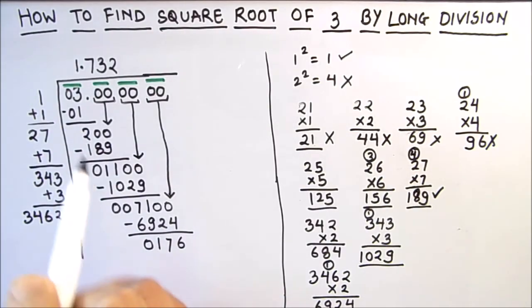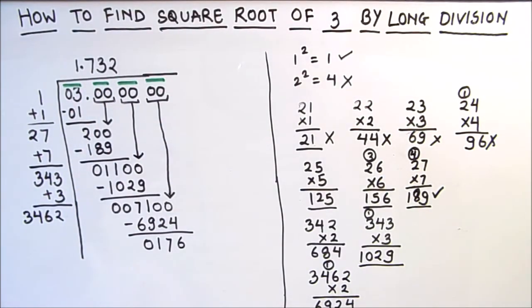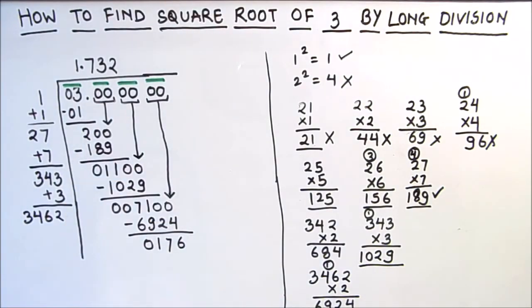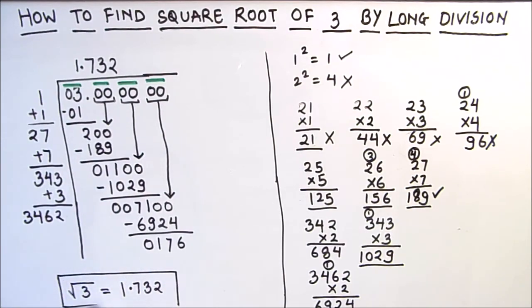We stop here as we have obtained 3 digits after the decimal point. So we have found the square root of 3 up to 3 decimal places. Our answer is: square root of 3 is equal to 1.732. We can find the square root up to as many decimal places as we want by continuing the same steps. This is the long division method for finding the square root of any number.